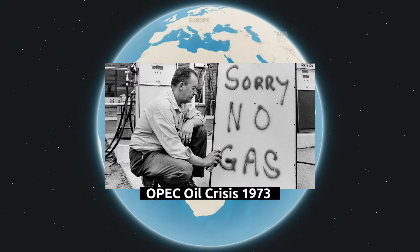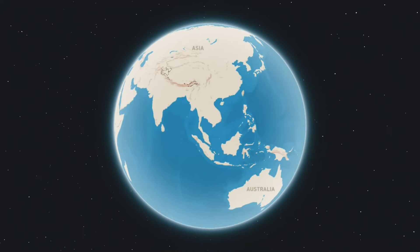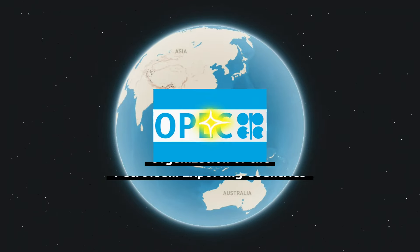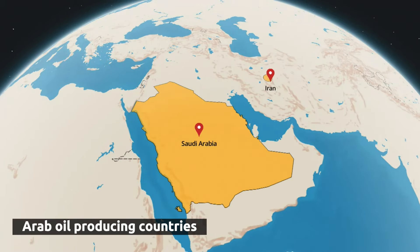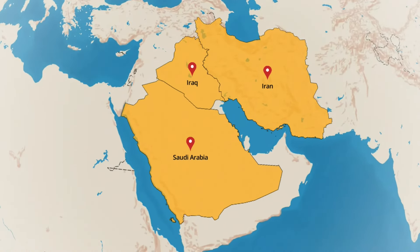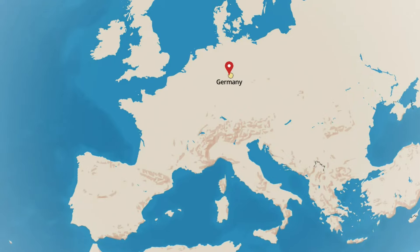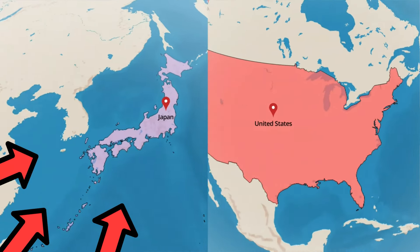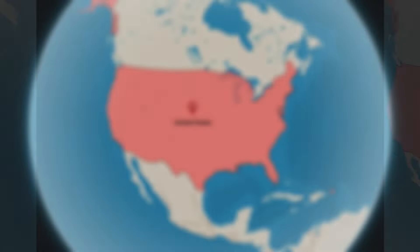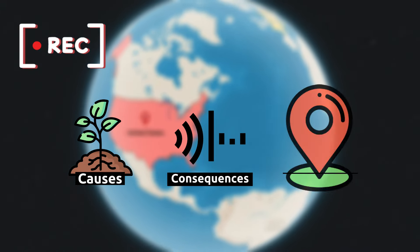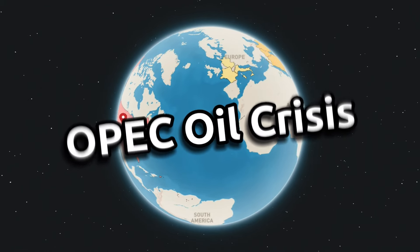Get ready to explore the OPEC oil crisis of 1973, a major event in modern economic history that affected countries across the globe. This crisis was sparked by the decision of the Organization of the Petroleum Exporting Countries, led by Arab oil-producing countries such as Saudi Arabia, Iran, and Iraq, to impose an oil embargo on countries that supported Israel in the Yom Kippur War. In this video, we'll examine the causes, consequences, and key locations involved in the OPEC oil crisis of 1973.